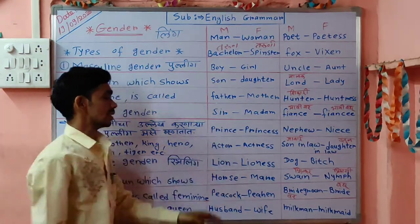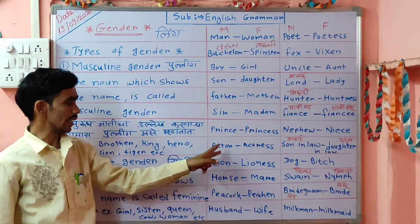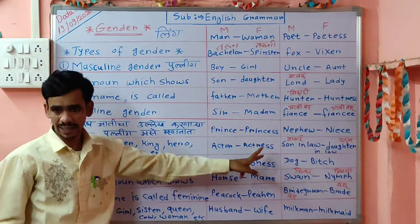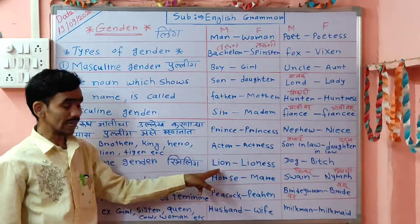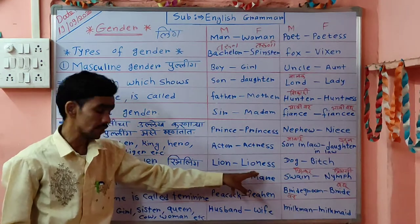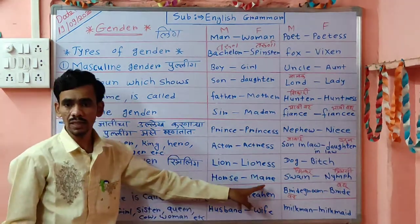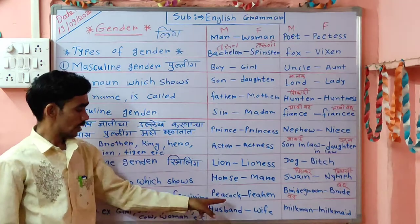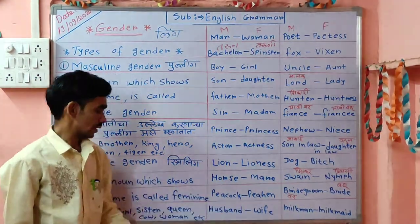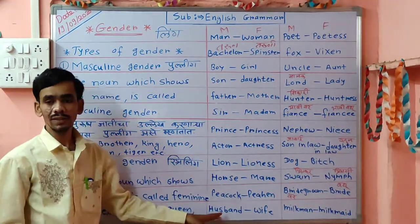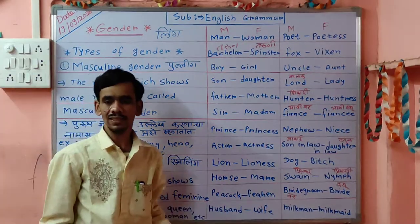Prince — Rajkumar — opposite is Princess. Princess is feminine. Then actor — opposite is actress. Nayak becomes Nayika. Lion — Siha — opposite is lioness — Sihani. Horse — Ghoda — opposite is mare — Ghodi. Peacock — Mor — opposite is peahen — Pihen. Then husband — Pati — opposite is wife — Patni.